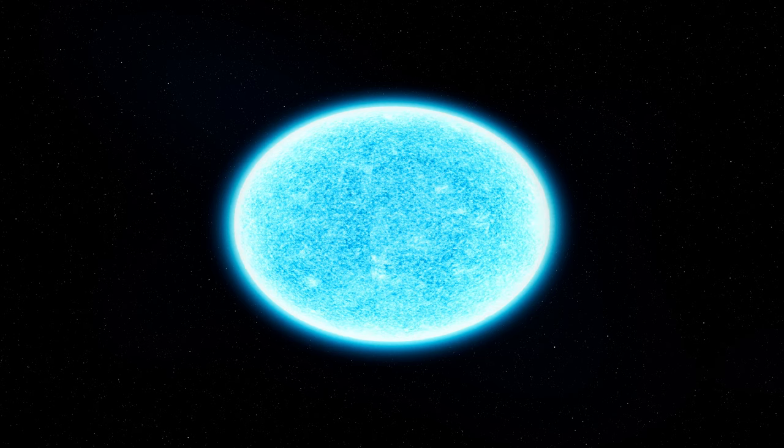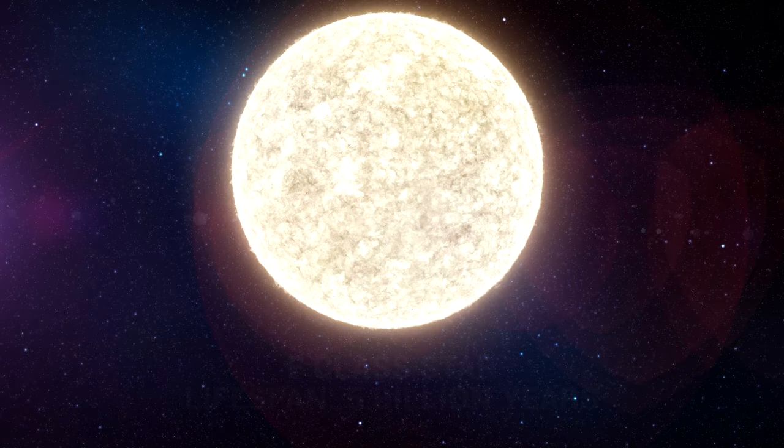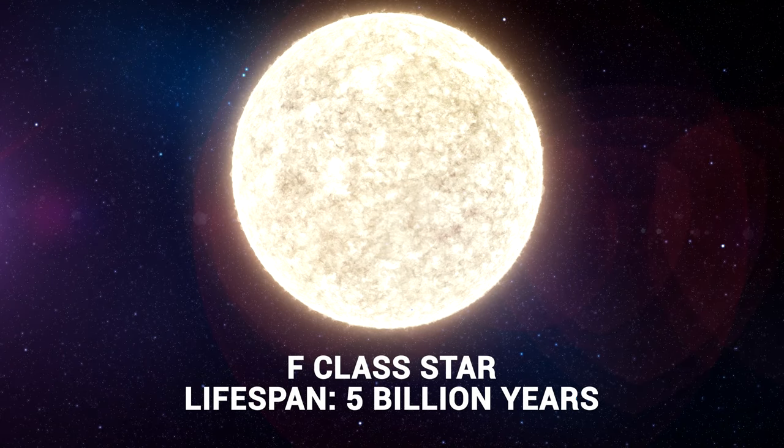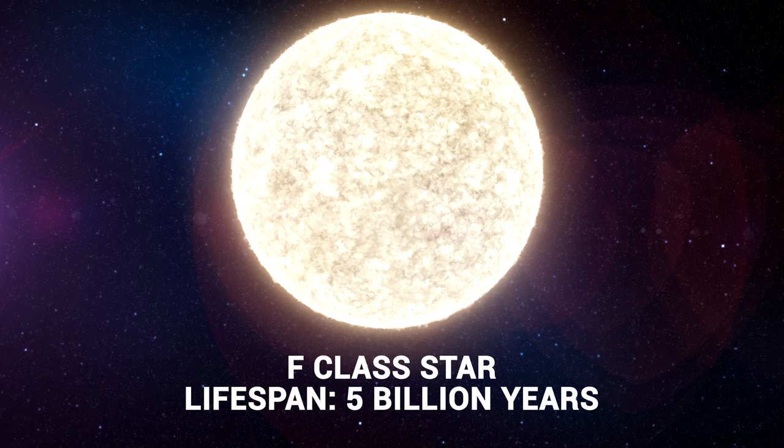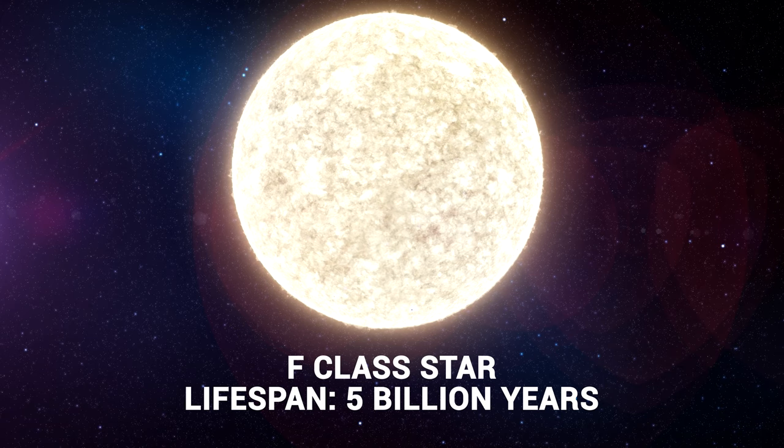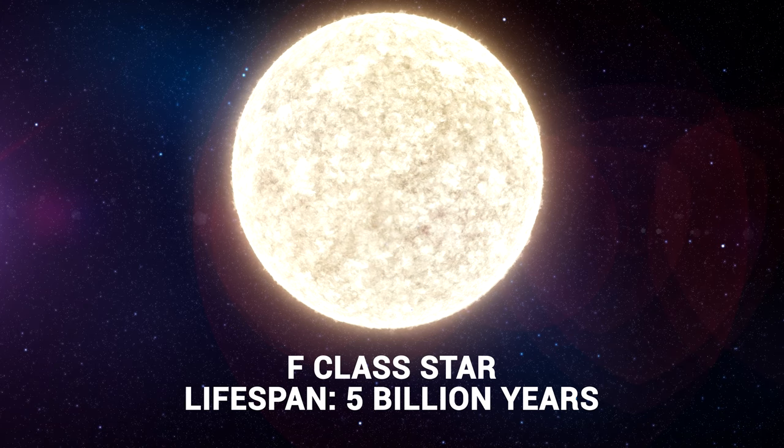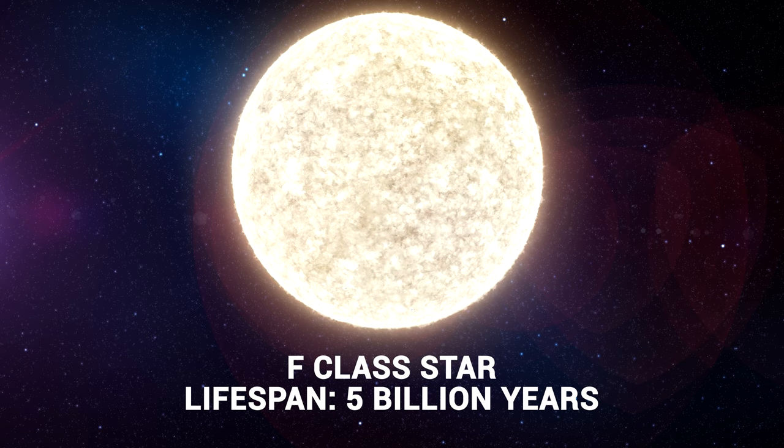F-class stars are slightly more massive than our sun, and make up 3% of all stars. With masses ranging anywhere from 1.01 to 1.4 times the mass of our sun, they can live for up to 5 billion years.